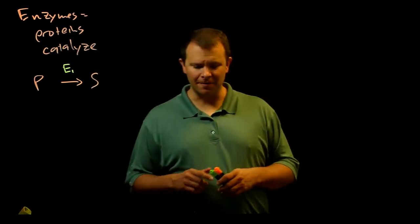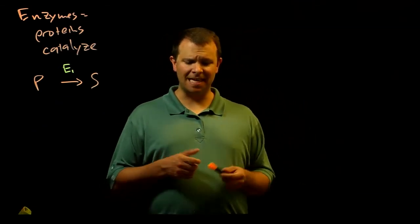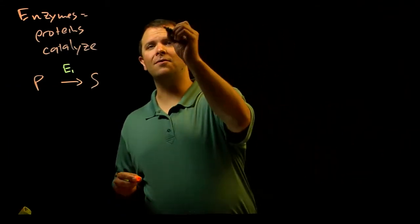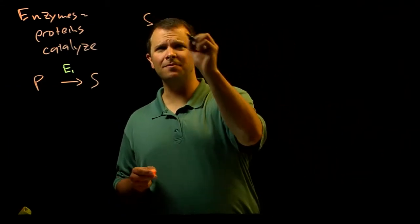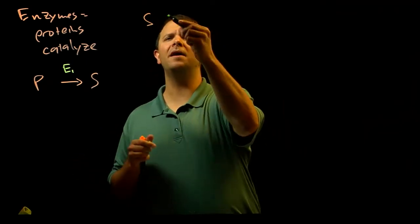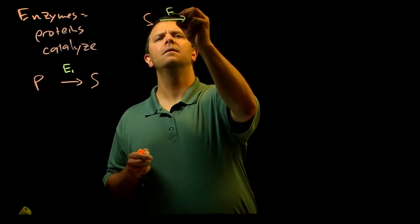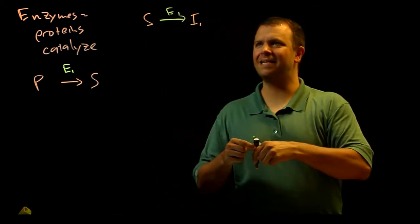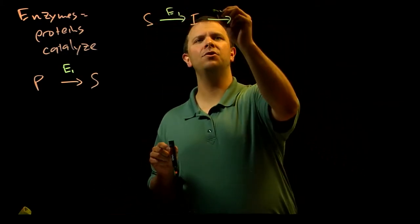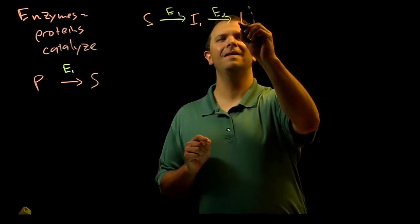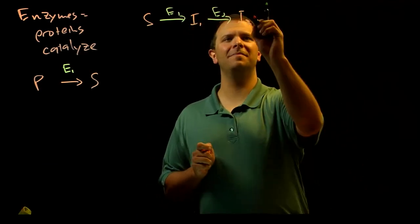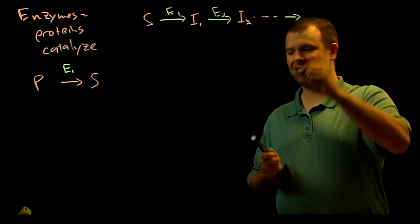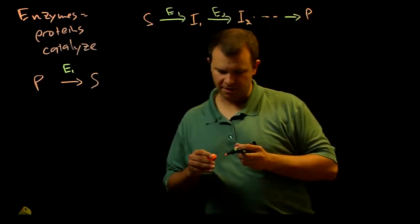And so it's actually better probably to think of this chemistry as happening in pathways. And so you start with a substrate and then enzyme 1 turns that substrate into an intermediate, and then enzyme 2 turns that intermediate into another intermediate, et cetera, until some last enzyme gives you your product.